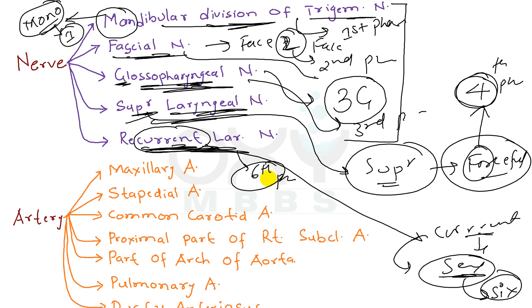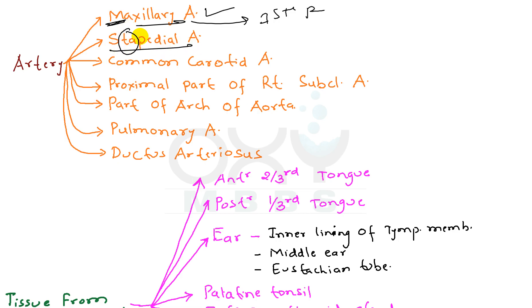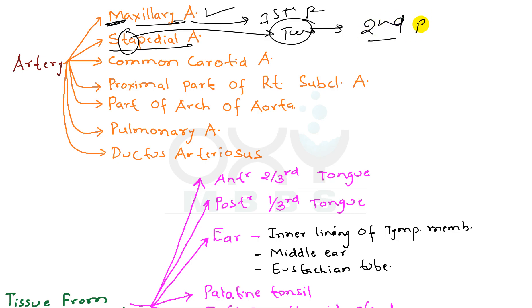Now coming to arteries. The first one is the maxillary artery — just derive 'mono' from the M, so maxillary artery is derived from the first pharyngeal arch. Now coming to the stapedial artery — 'Te' means number 2, so the stapedial artery is derived from the second pharyngeal arch.